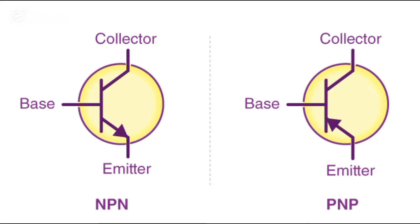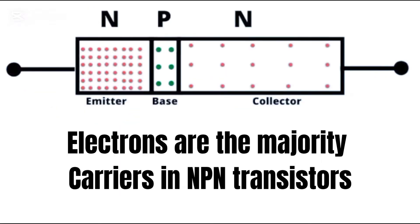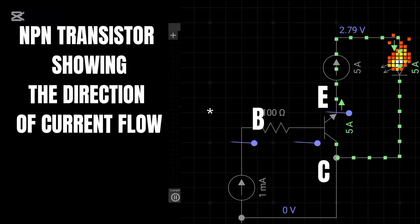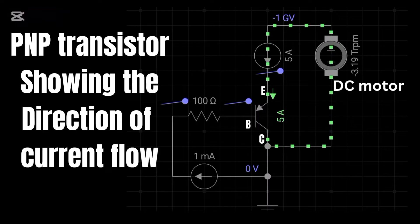There are two main types of BJTs, the NPN transistor and the PNP transistor. In an NPN transistor, electrons are the majority carriers. When the base is positive, current flows from the collector to the emitter. In a PNP transistor, holes are the majority carriers. Here, current flows in the opposite direction when the base is negative.